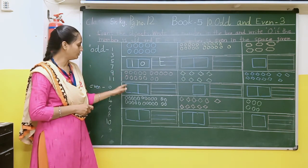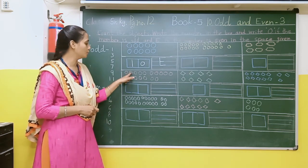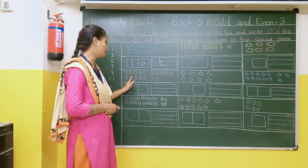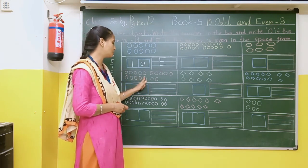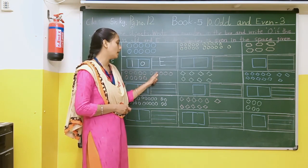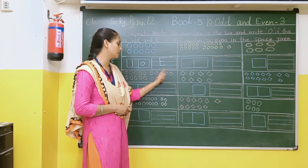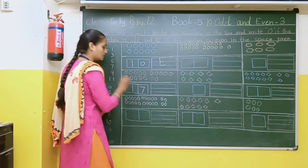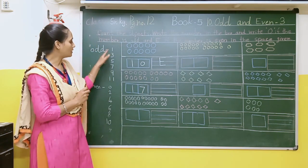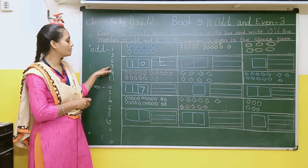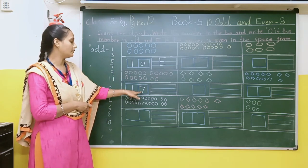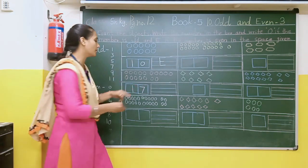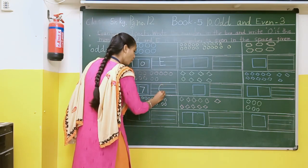Now count: 1, 2, 3, 4, 5, 6, 7, 8, 9, 10, 11, 12, 13, 14, 15, 16, 17. Here the number is 17. So 7 comes under odd. This number is 17, which comes under odd number. So here we have to write capital O — O for odd.